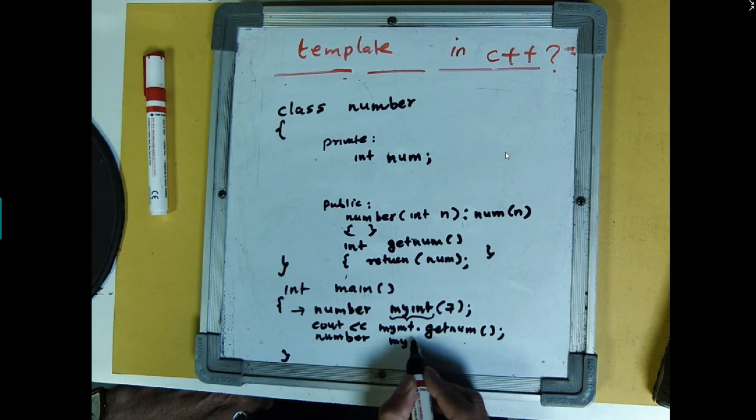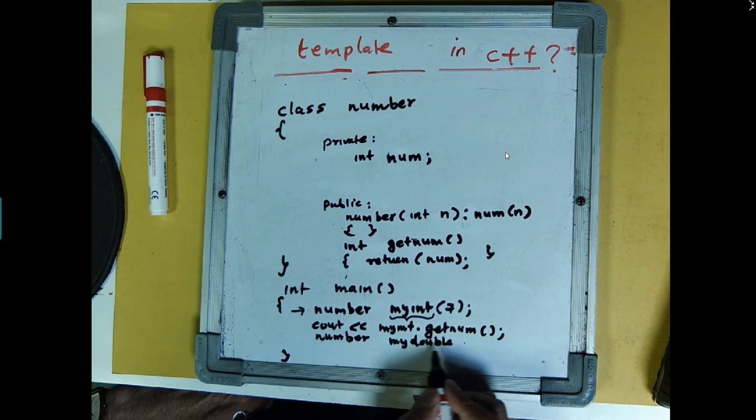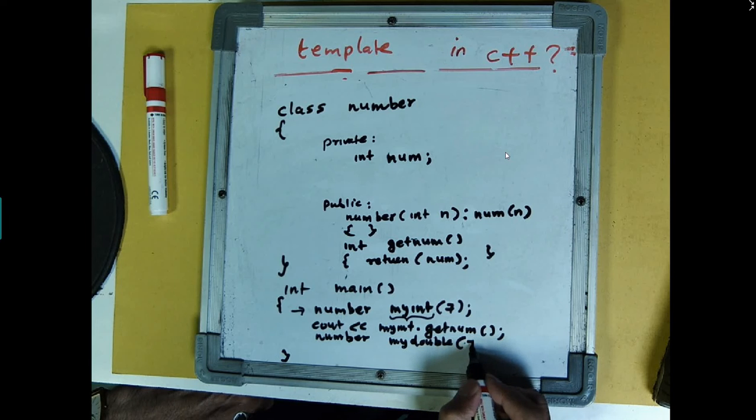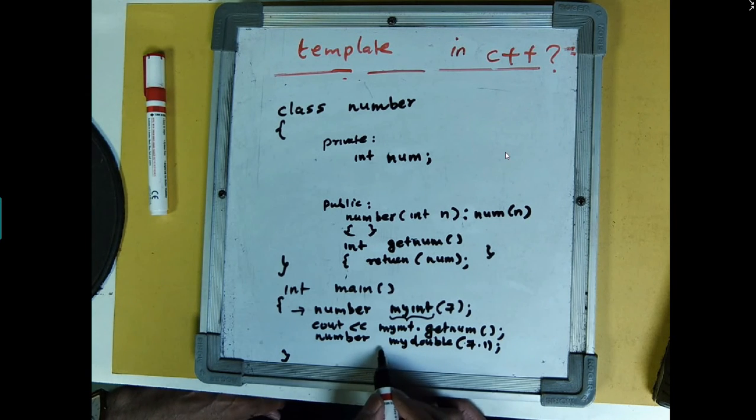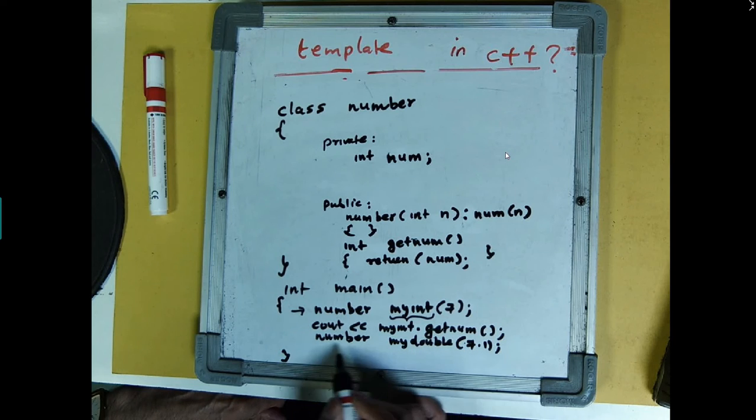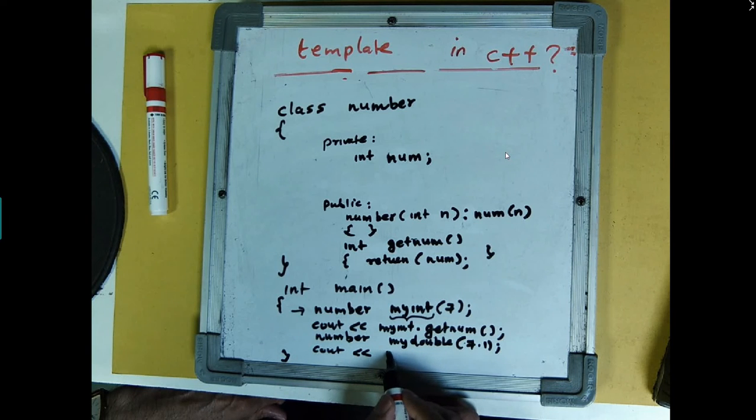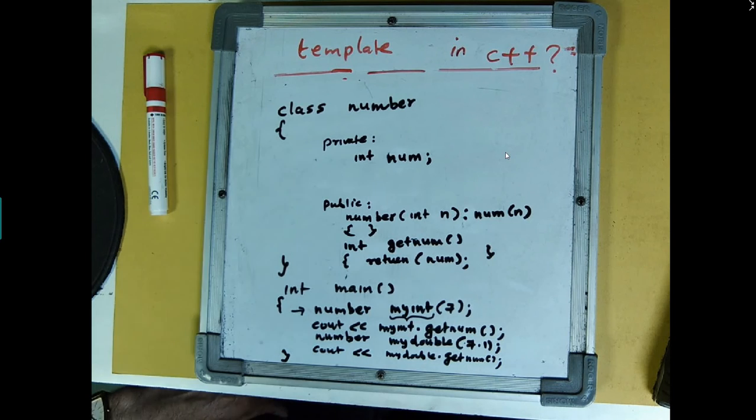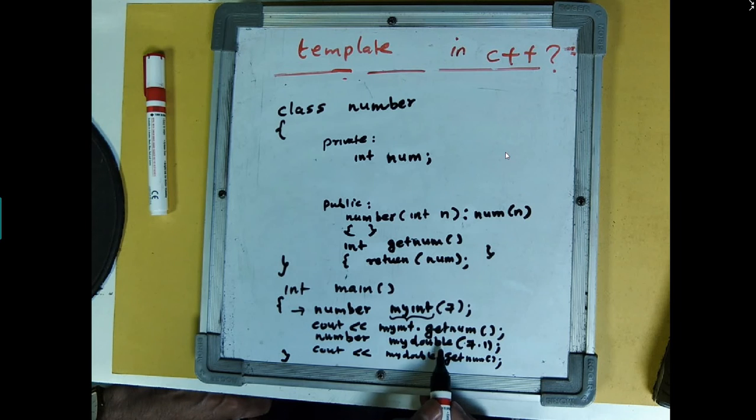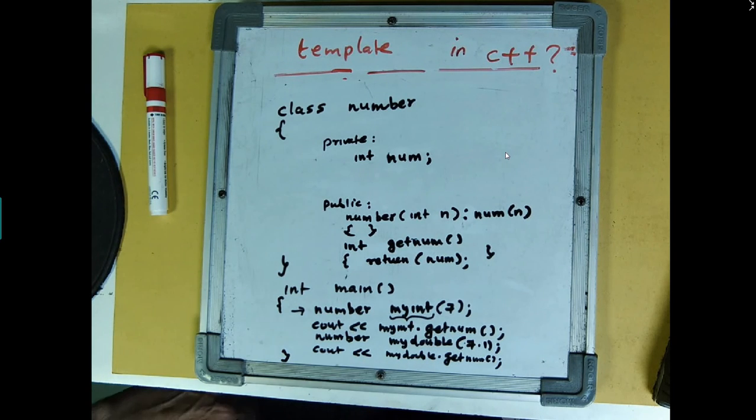So suppose you will make a general purpose which will, let's say, create another instance which is called my double, and when I use the same line cout my double dot getNum, should give you the double number. That means whenever I call this function it has to work for double, whenever I call this function it has to work for integer.